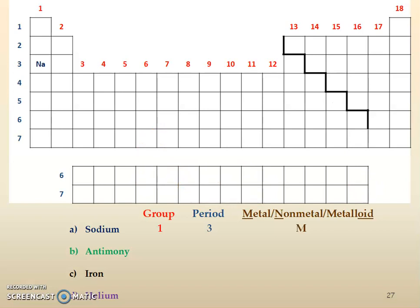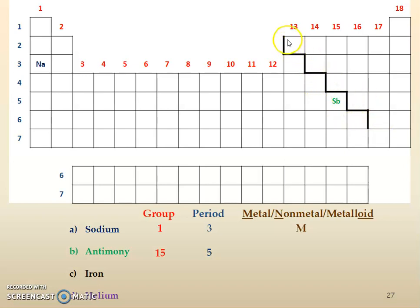Pause the video and find antimony — that's another element with a weird symbol, SB. Hopefully you found it here. The group number is 15, and the period is 5 — go back to the left side to count the rows. It touches the stair step line, so most likely it's a metalloid. Make sure it's not aluminum or polonium since those are our exceptions. It is a metalloid.